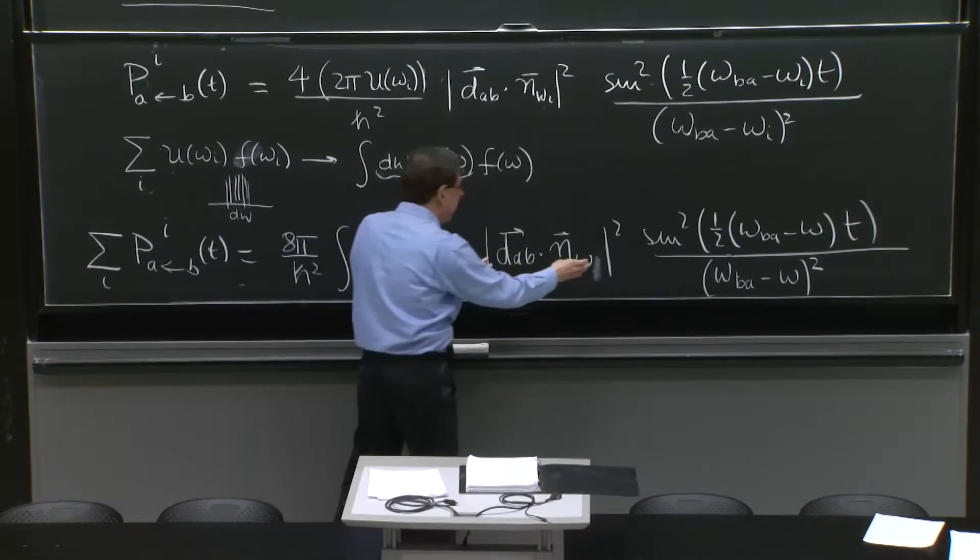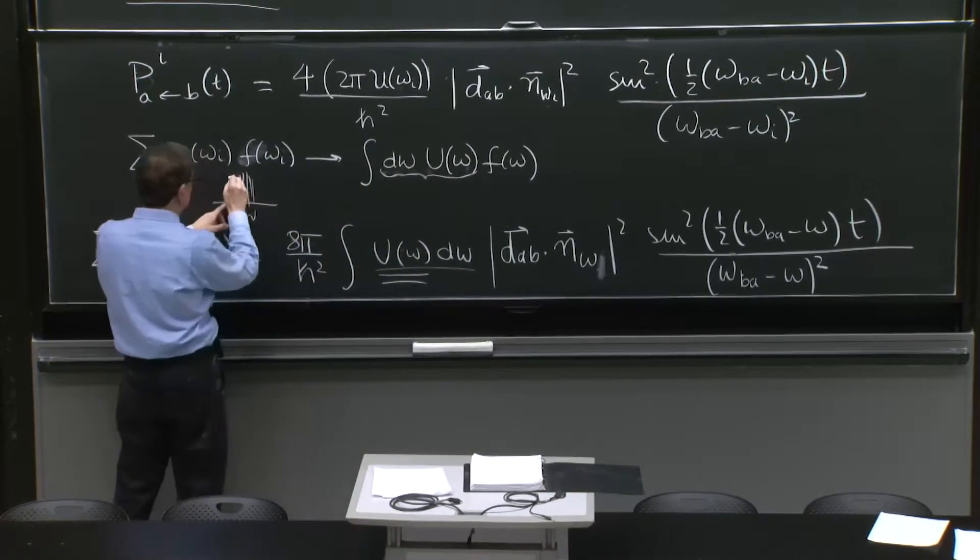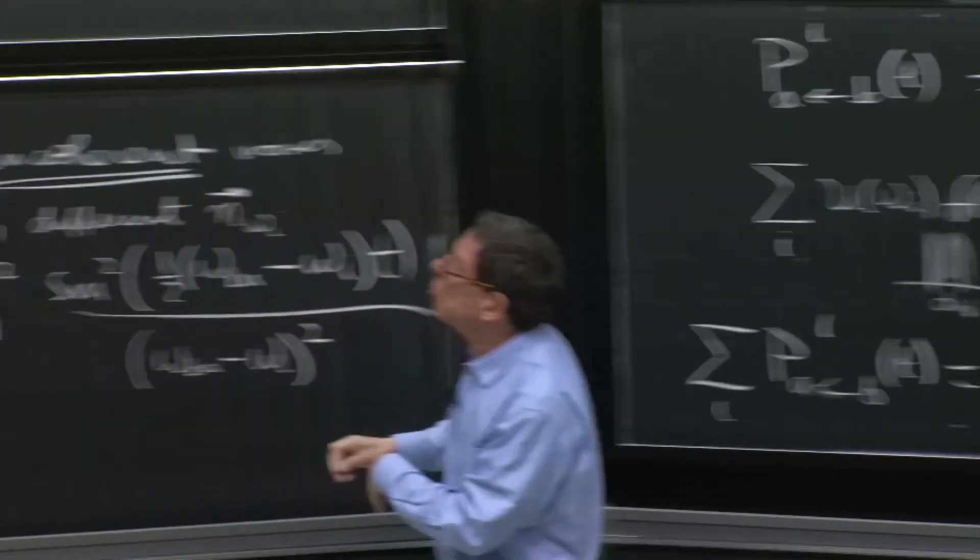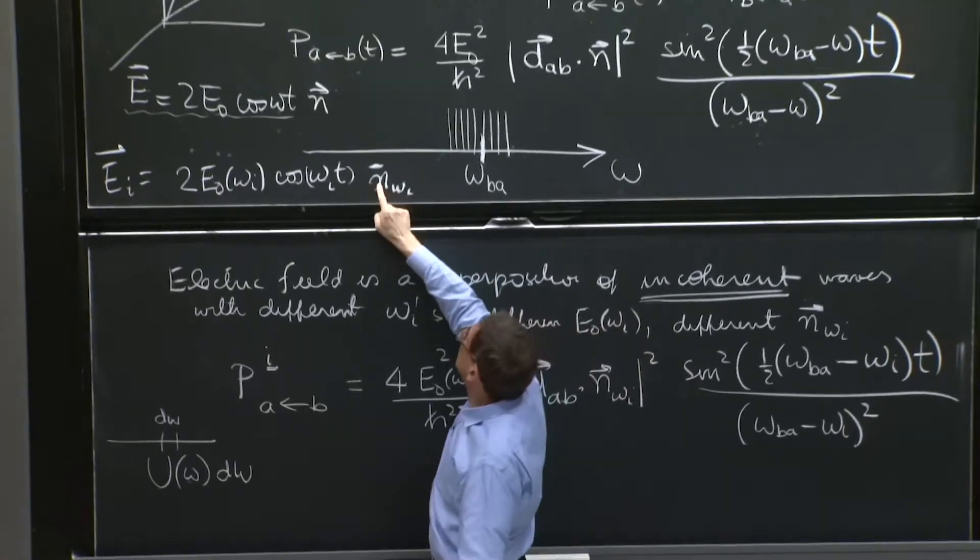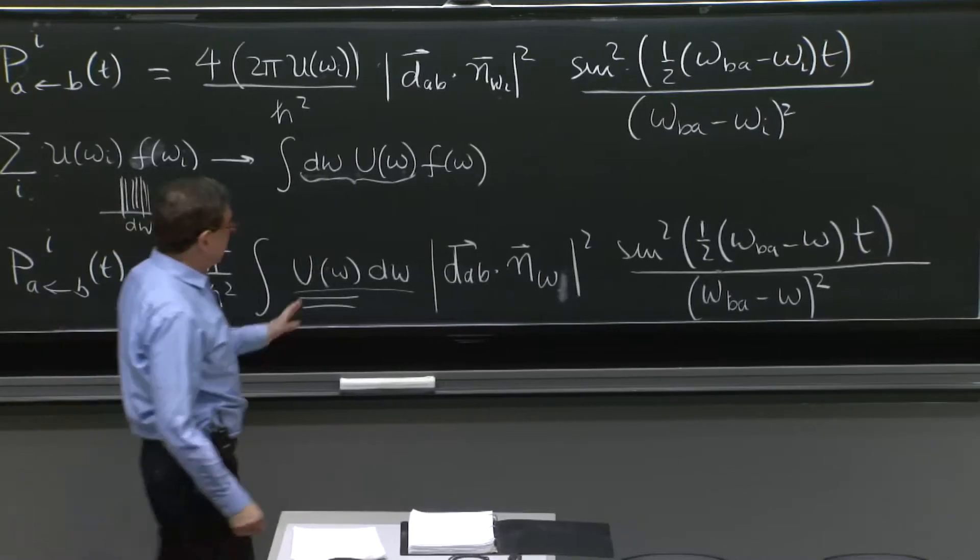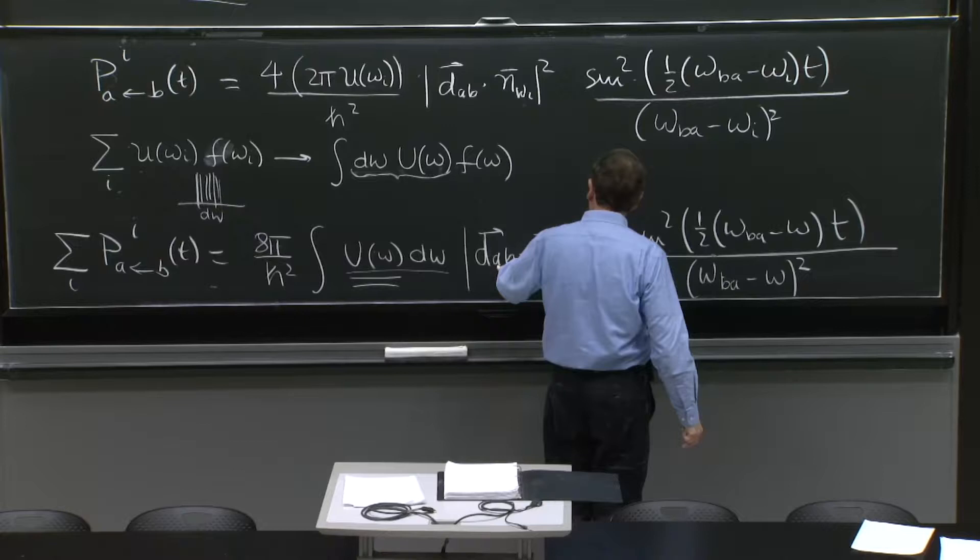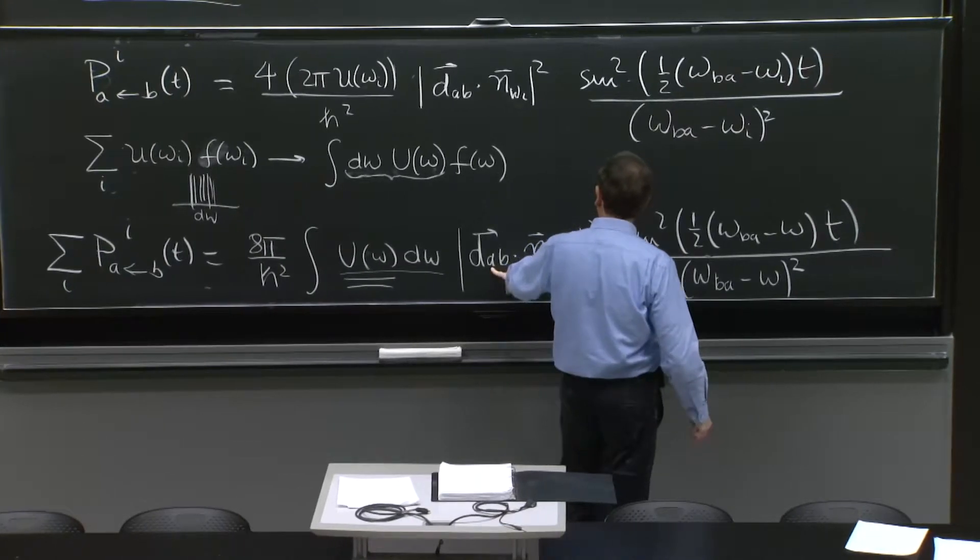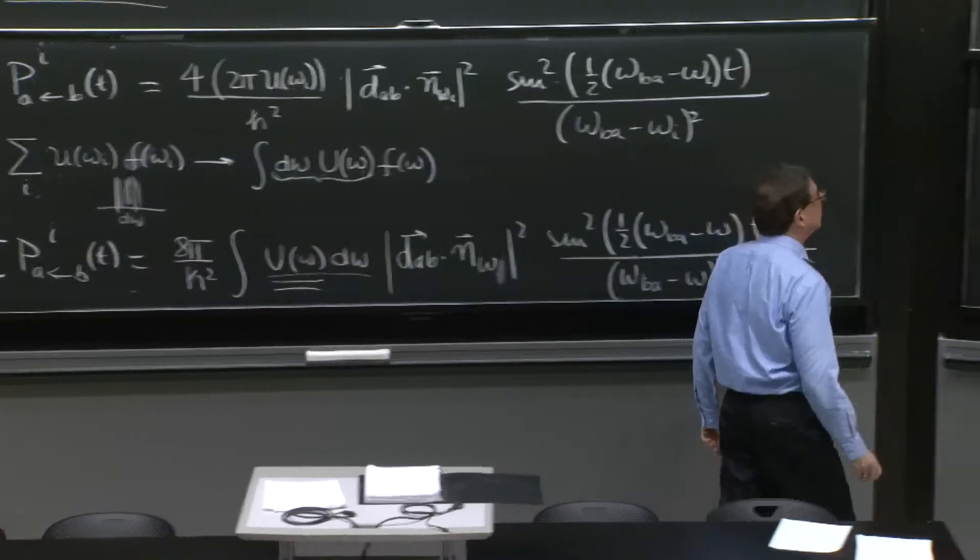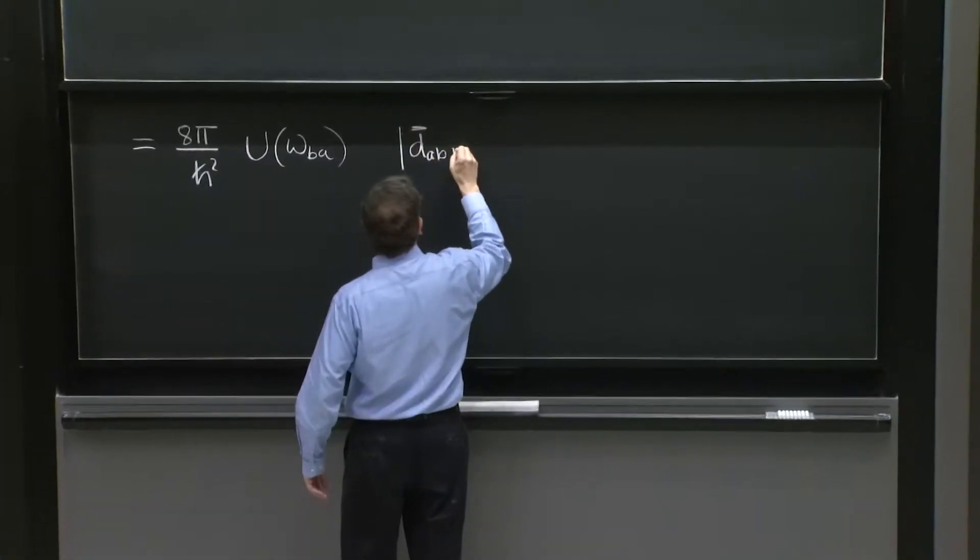So when I have this, and I integrate over omegas, the various omegas, even for a given omega, there might be many lines that correspond to just a different direction because the field comes in all directions. So the interpretation is that we can take this out,